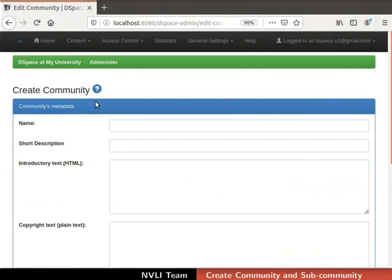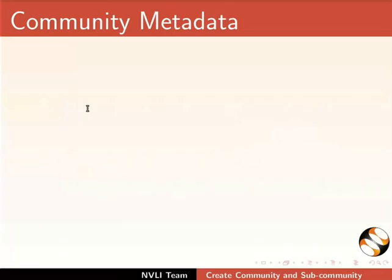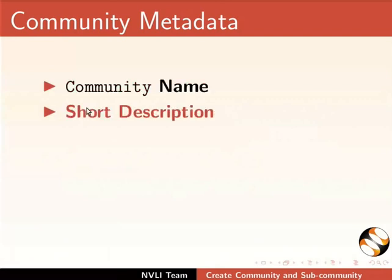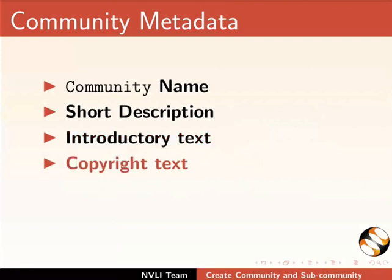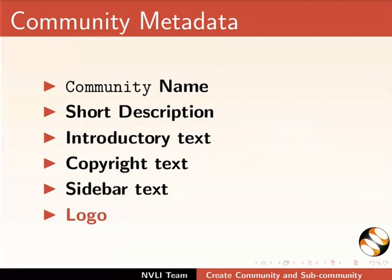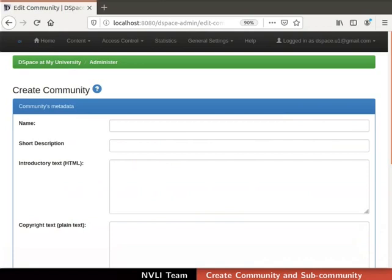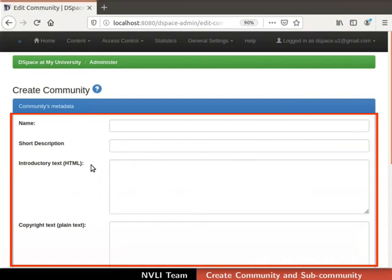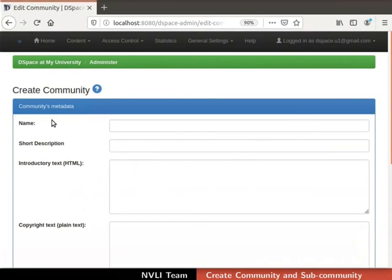The Create Community page opens up. It displays the community's metadata form. Communities are described using metadata elements. Basic metadata elements of communities are community name, short description, introductory text, copyright text, sidebar text and logo. Notice that all the fields in the form are optional, but it is recommended to enter at least a community name. Otherwise, an untitled community will be created.